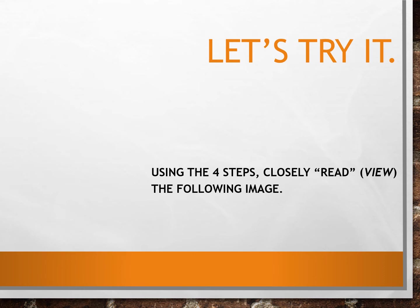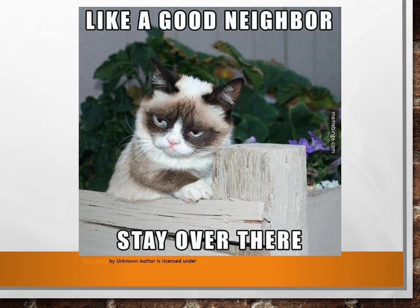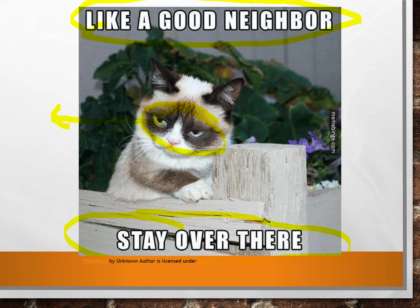Now let's do one together. Take a look at the image on the next slide and see if we can get through the four steps of close reading. Step one is to notice, so the first thing I'm going to do is pay attention to what I see and highlight some things in the image. I see a grumpy cat whose eyes are looking at somebody in the distance — he's clearly not happy. I see text at the top and bottom, a background of flowers, and the cat appears to be outside leaning on a fence post.